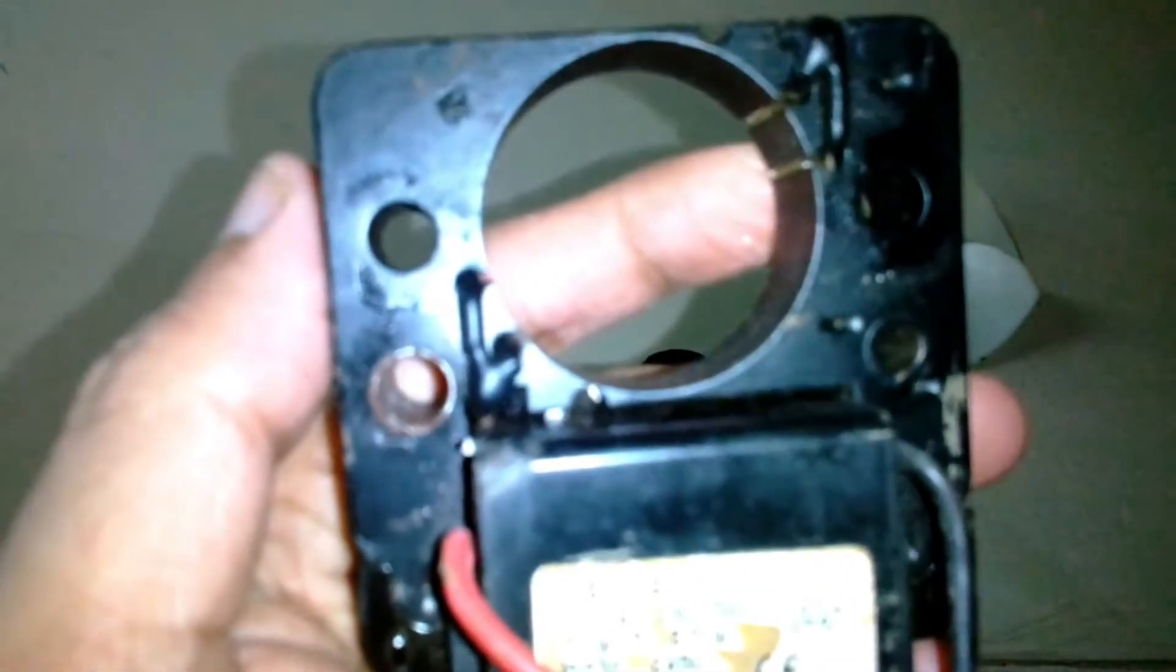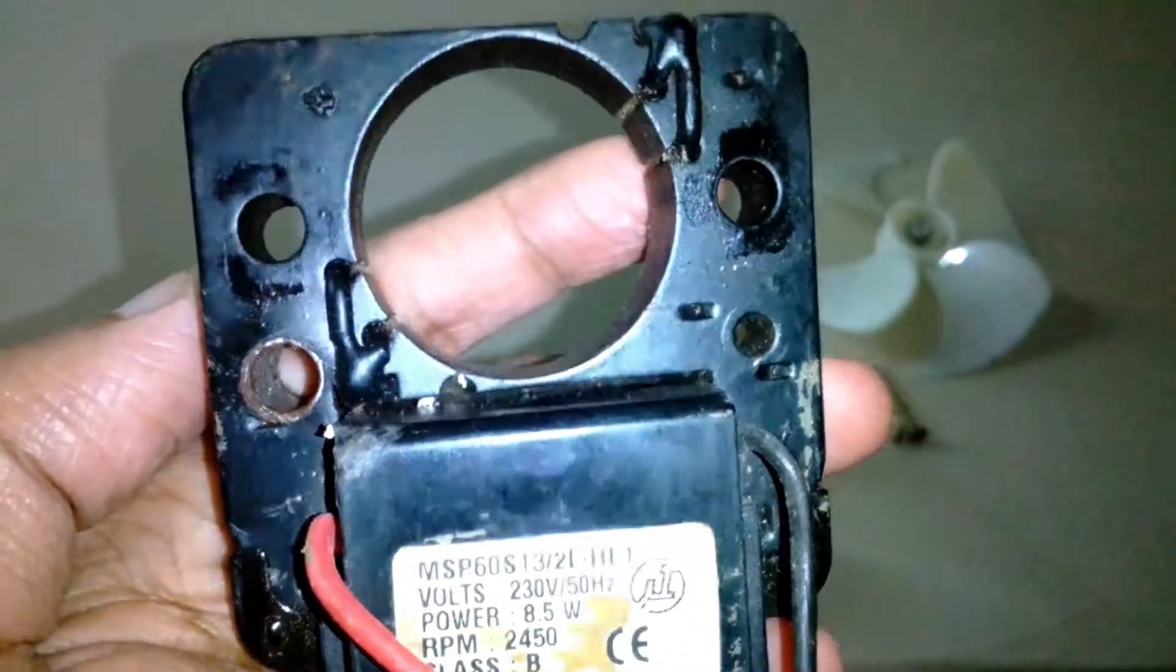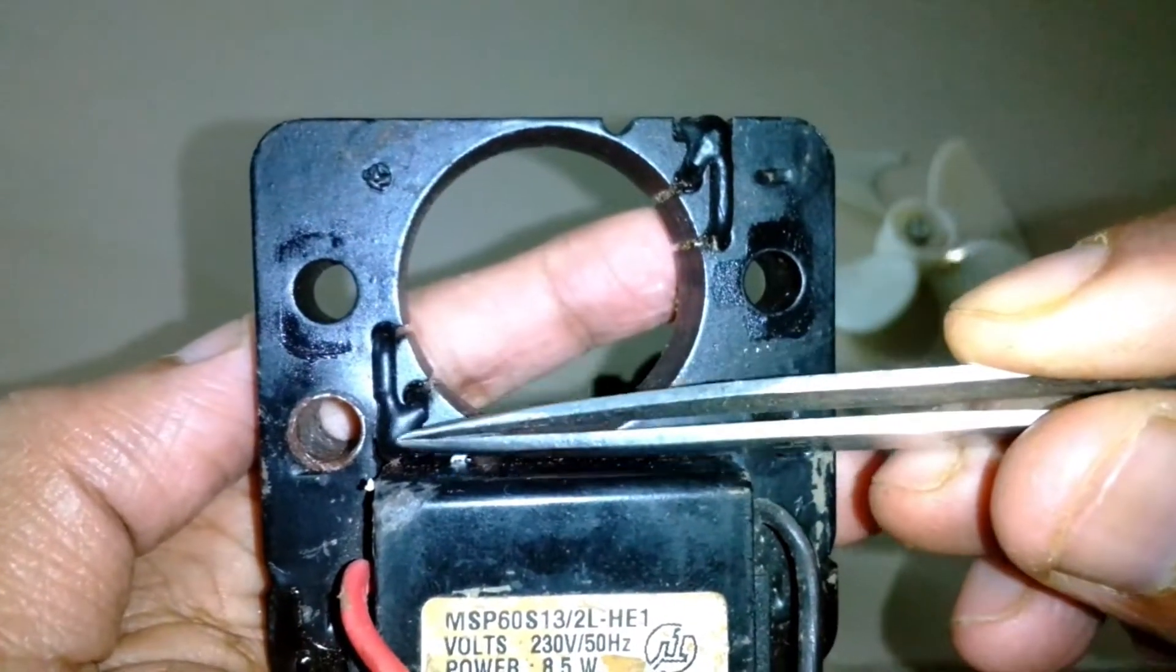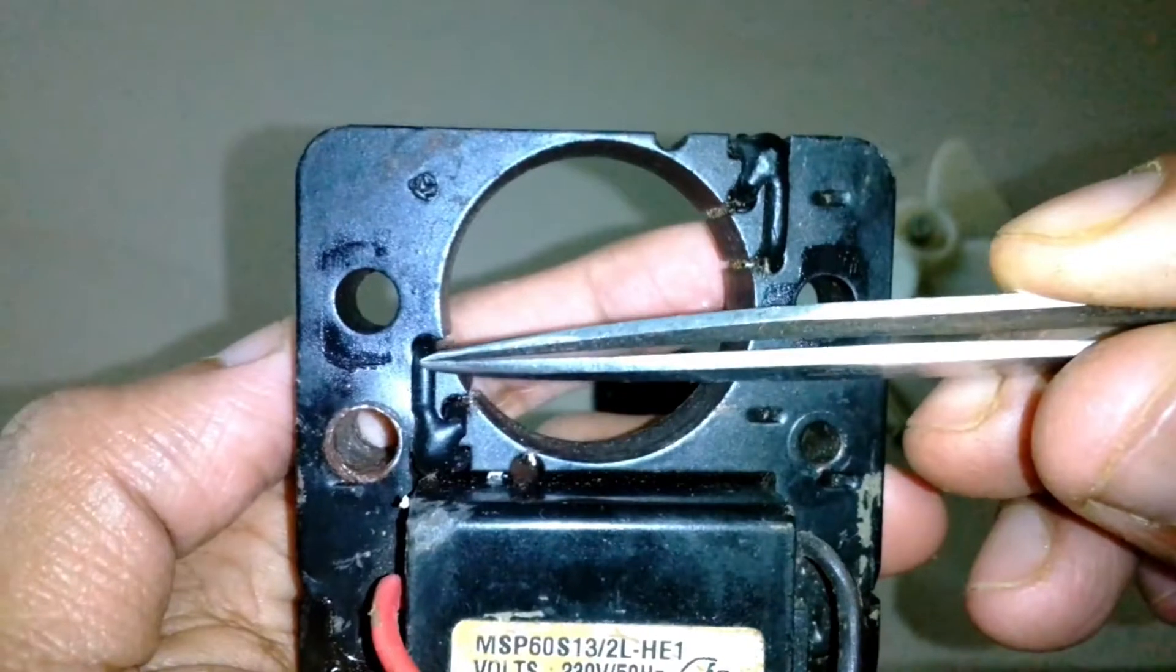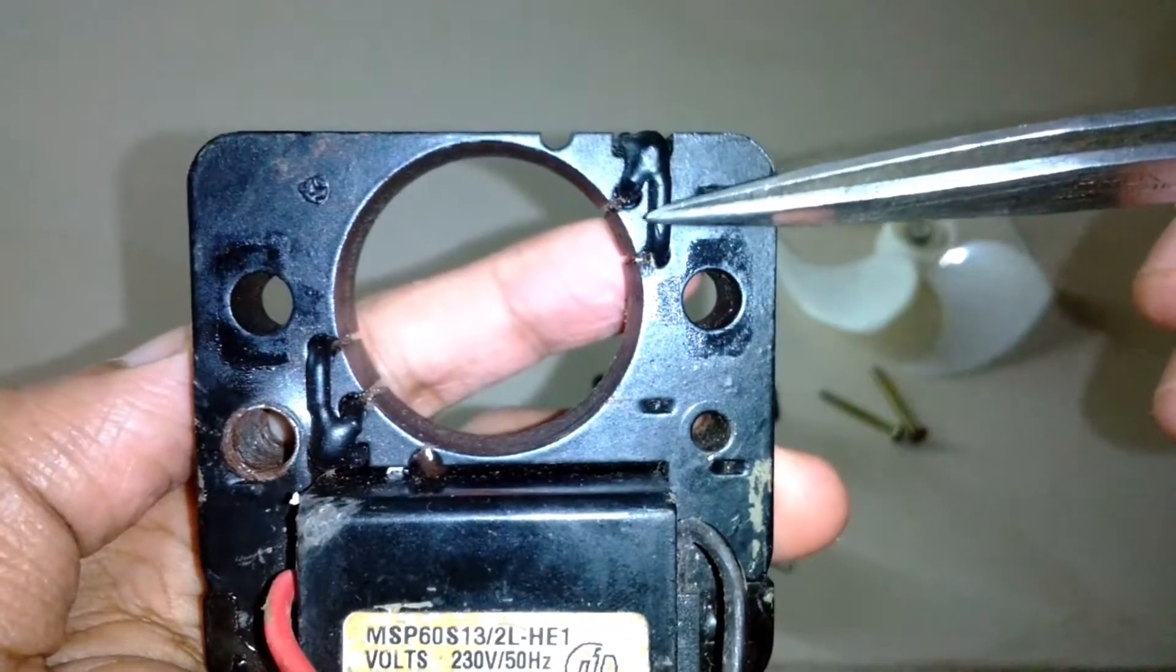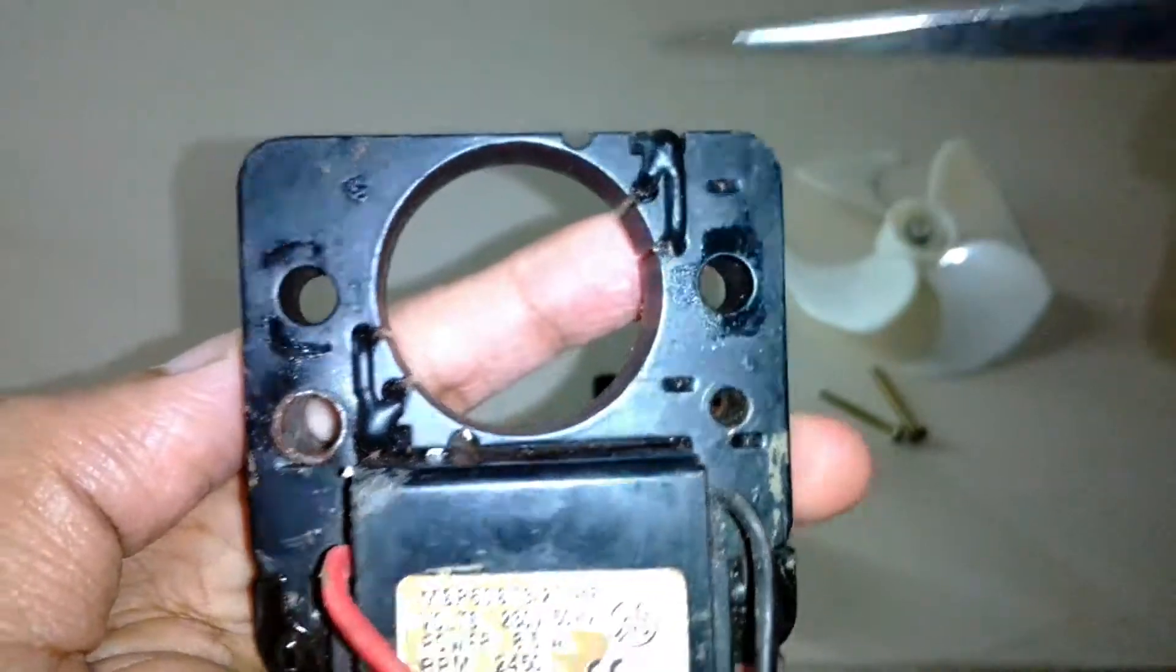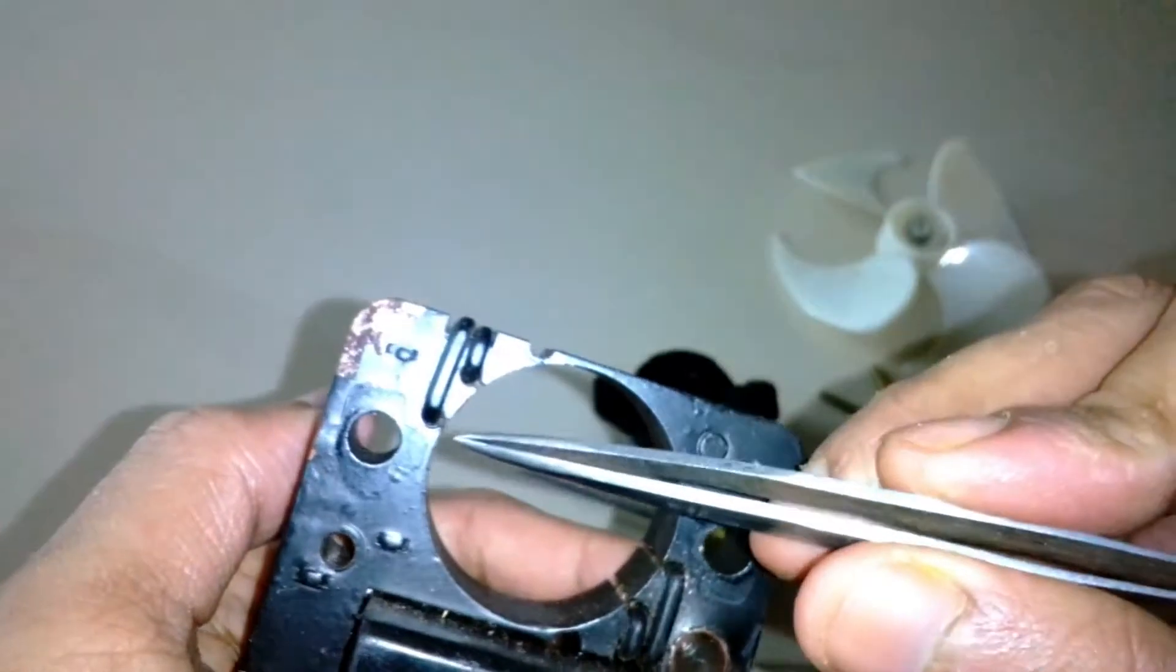How the shaded pole induction motor works: it works due to these rings over here. You can see these are copper rings here. They're actually painted black but they're purely made out of copper and they act as a solid coil. They're shorted out in both sides.